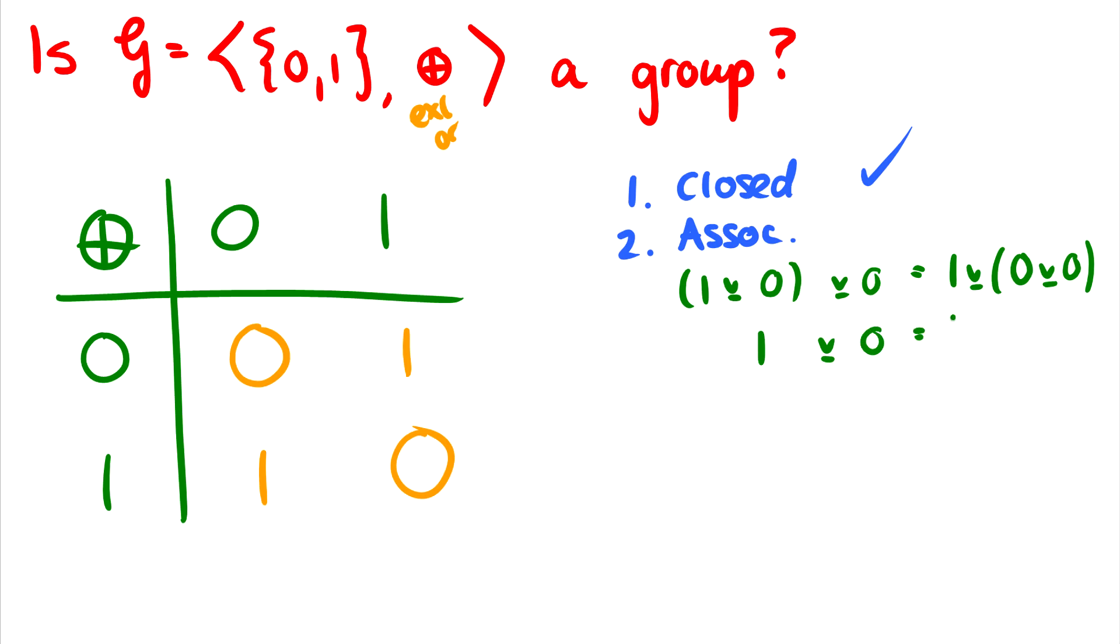Is this equal to 1 XOR... Well, 0 and 0 is going to give us 0 back because they are the same value. So it'll be 1 XOR 0. It'll just be 1 equals 1. So with the one example we did, it is associative. In fact, if we did all of the examples, we would see that it is associative. You'd have to check it manually or find one counterexample.